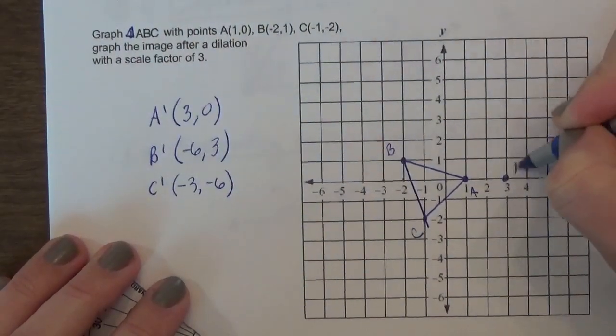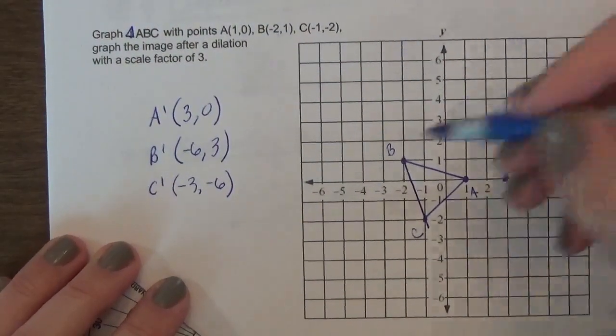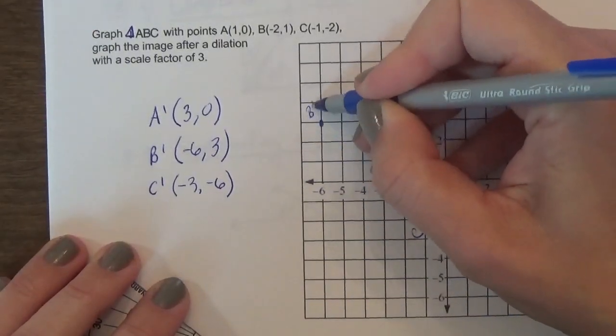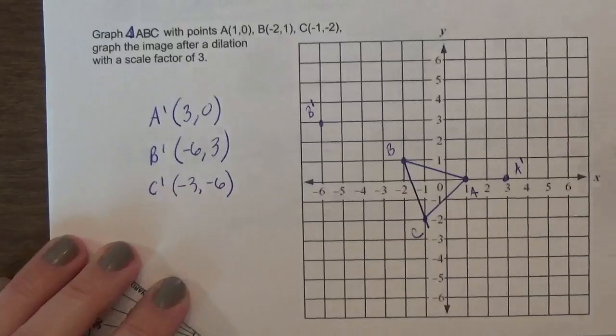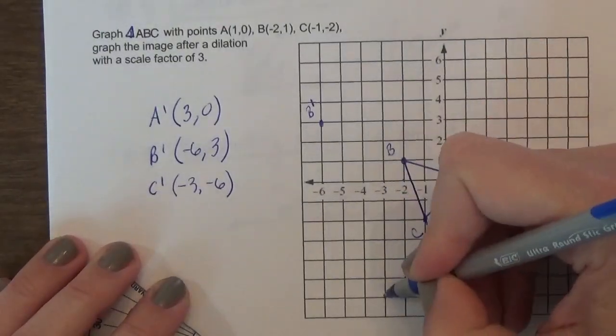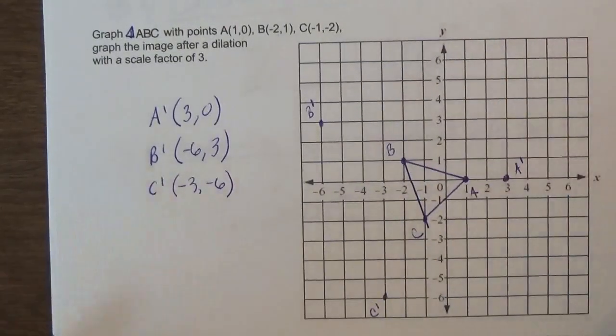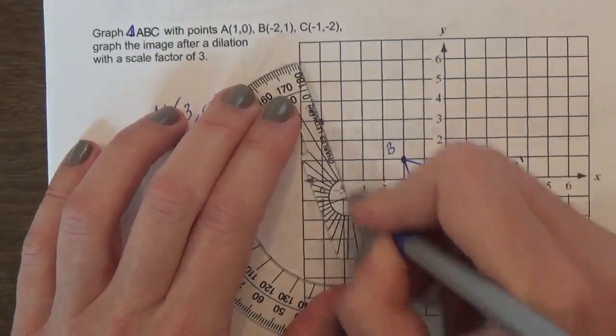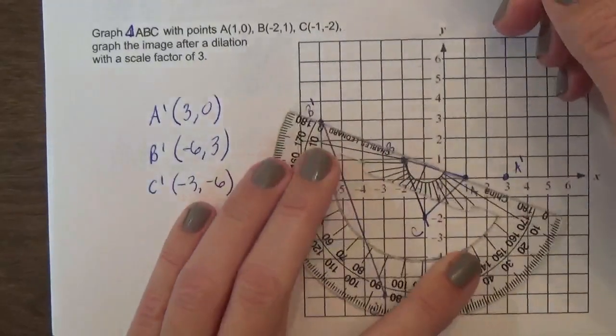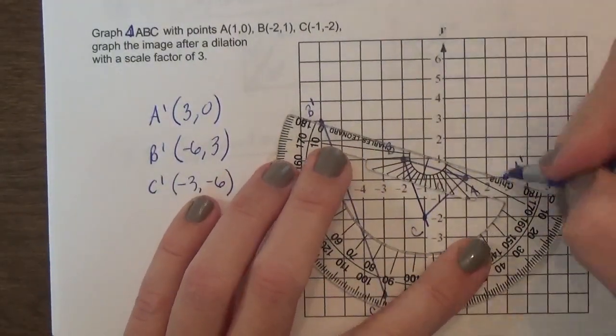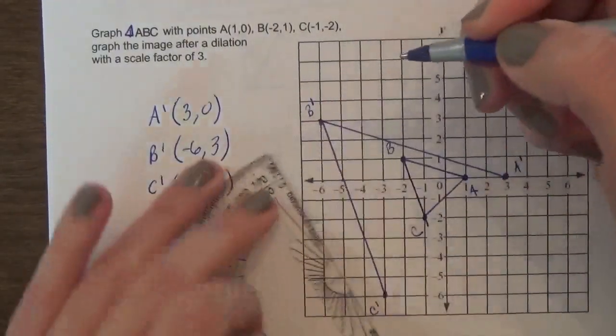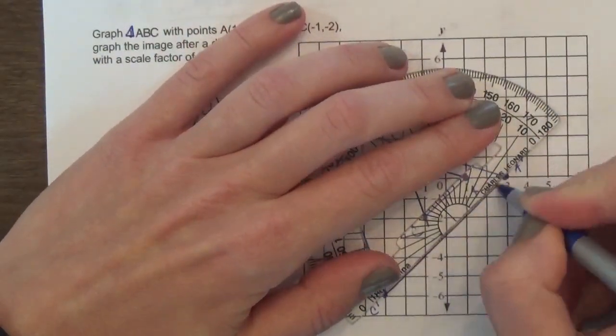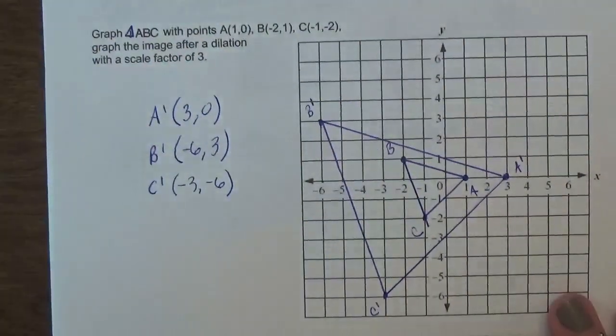So 3, 0, here's A prime. Negative 6, 3 is B prime. And negative 3, negative 6 is C prime. Let's connect these. Again, we should get a similar looking triangle, really in the same direction, but bigger. Three times bigger. I think that looks good.